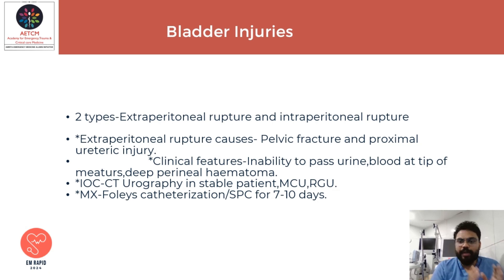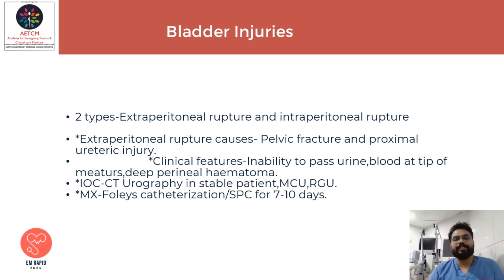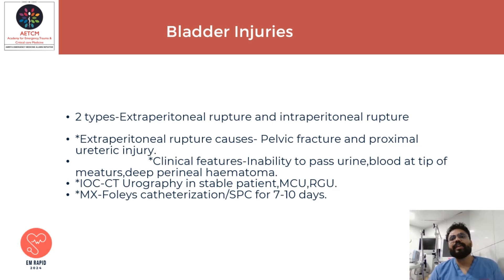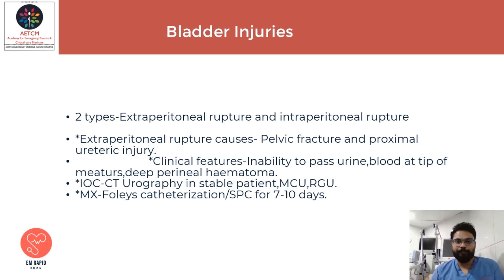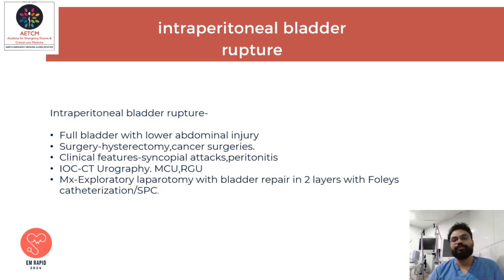Bladder injuries are classified as extraperitoneal or intraperitoneal rupture. The causes of extraperitoneal rupture include pelvic fractures and proximal urethral injuries. Clinical features include inability to pass urine, blood at the tip of the meatus, and deep perineal hematomas. The investigation of choice is CT urography in a stable patient; voiding cystourethrogram and retrograde urethrogram can also be considered. Management is catheterization or suprapubic catheterization.